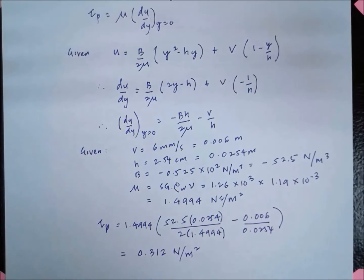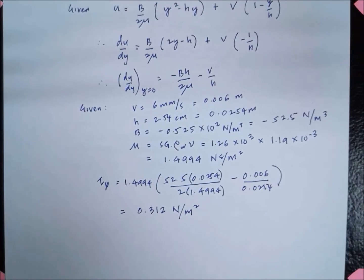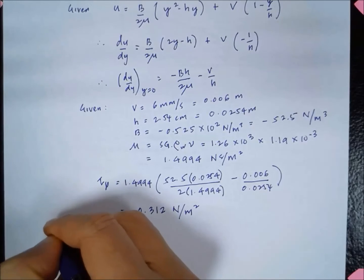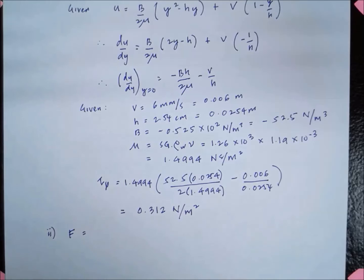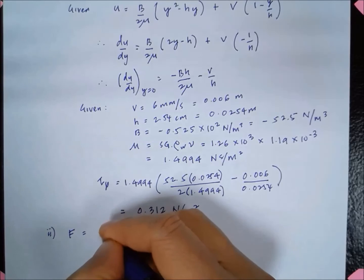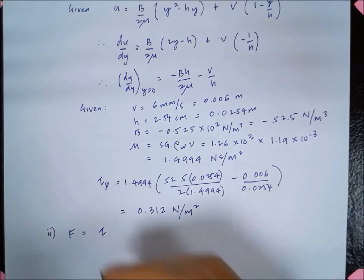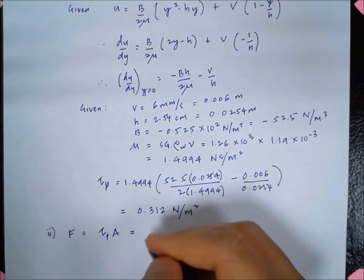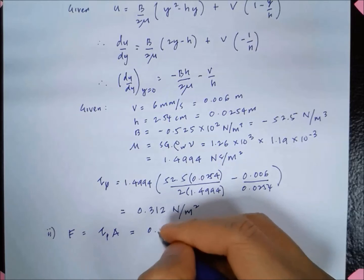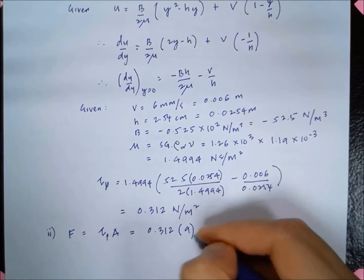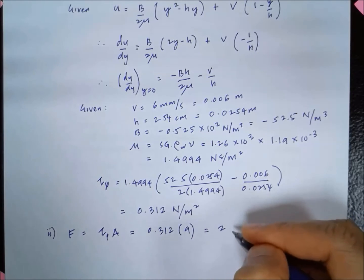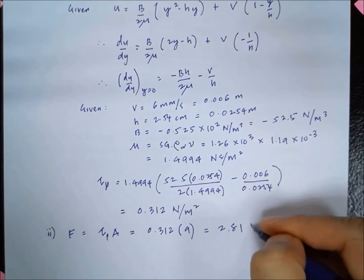The second part of the question is finding the force. By definition, shear stress is force over area. So in order to get force, we take the shear stress at the plate multiplied by the area. So it's 0.312 multiplied by 9, giving us 2.81 newton.